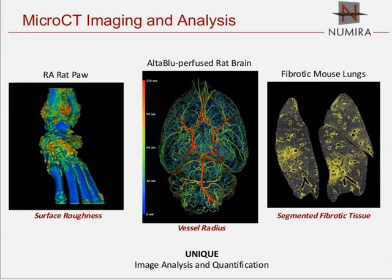The real capability at Numera is layering software tools onto imaging data to provide meaningful metrics. Scientists don't just want raw imaging data — they want to quantify and calculate statistics. On the RA rat paw, we quantify surface roughness across the joint. In the middle, we calculate vessel radius throughout the vascular network. Off to the right, we show hyperattenuating regions within fibrotic tissue and calculate what percent of the lung is fibrotic. These metrics come into play in oncology studies as well.